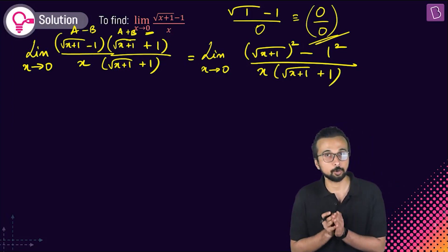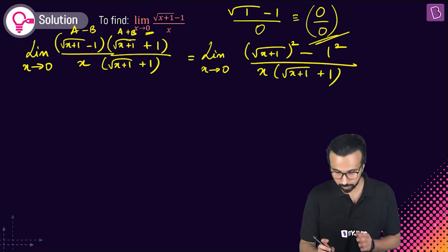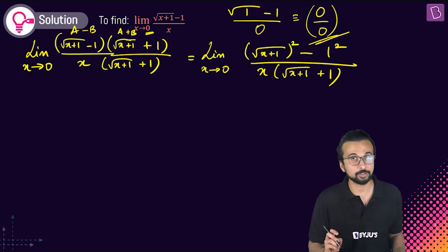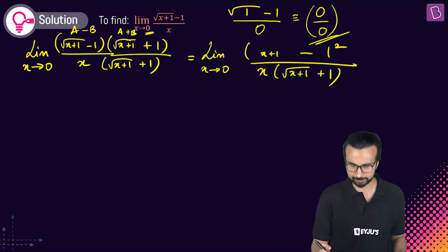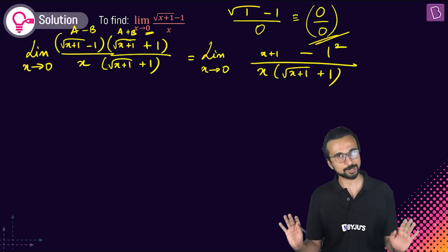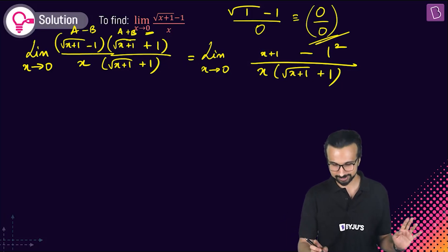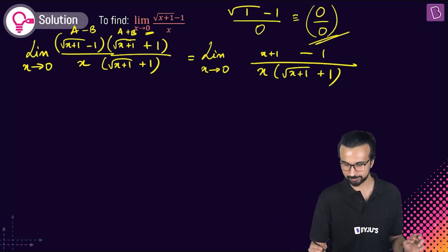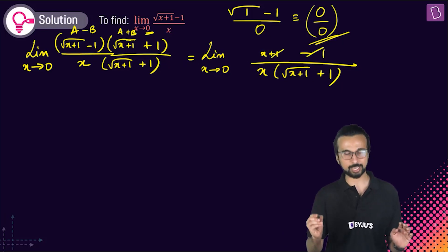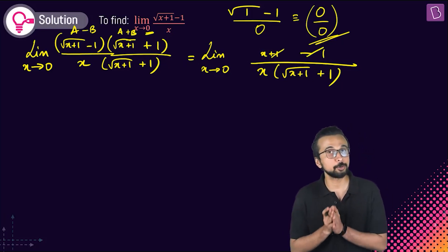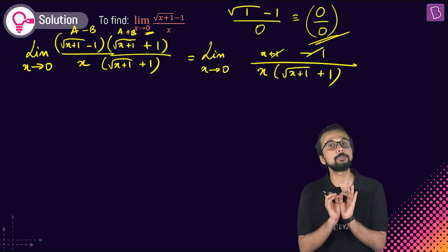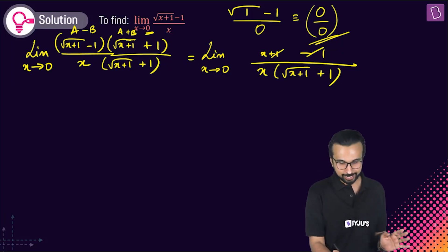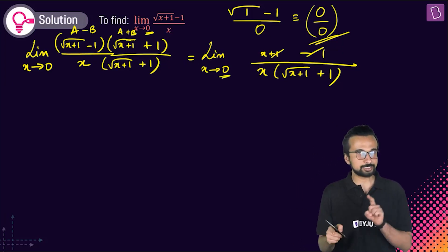The denominator is x times (root of (x+1) plus 1). Now look at the numerator: root of (x+1) whole squared is just x+1. So we have x+1 minus 1, the plus one and minus one cancel out, leaving plain x in the numerator, with x tending to zero.